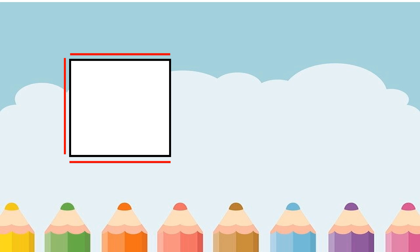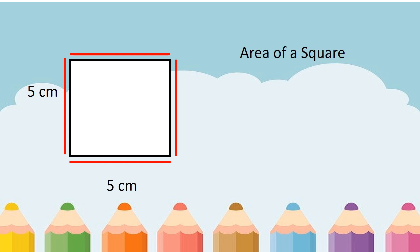What plane figure is this? Yes, it is a square. A square has four equal sides. Let us now find out what is the area of a square. First we must know the formula. The formula for getting the area of a square is A equals S times S, or area is equal to side times side. The first side that we have is 5 centimeters.